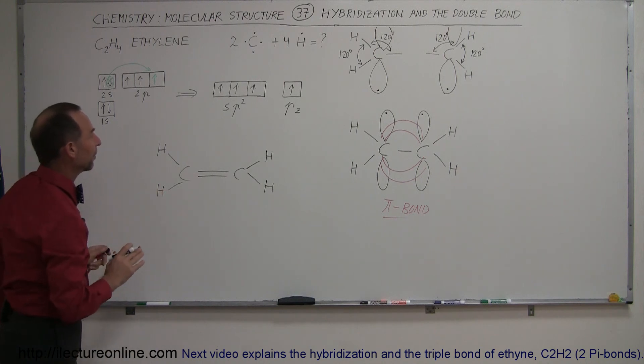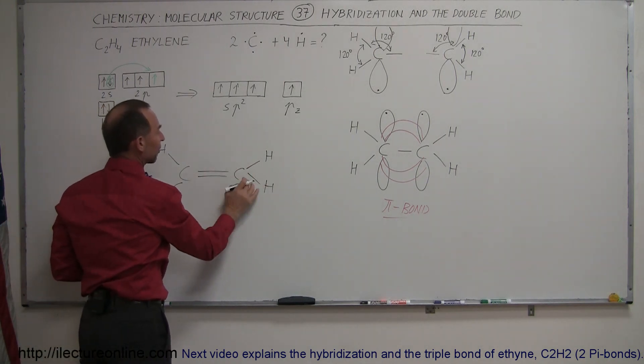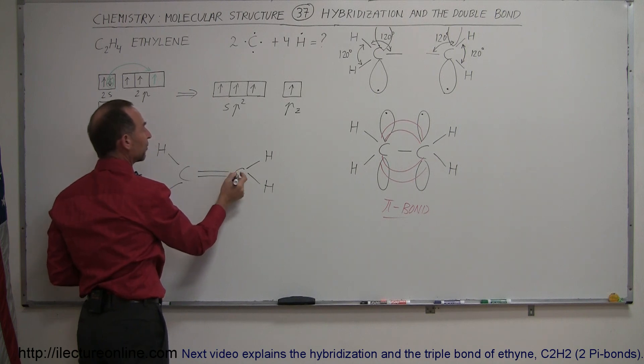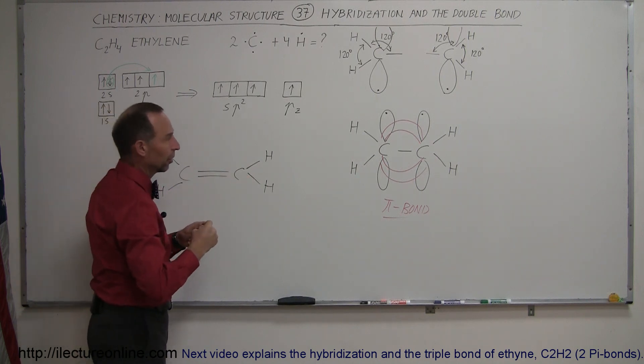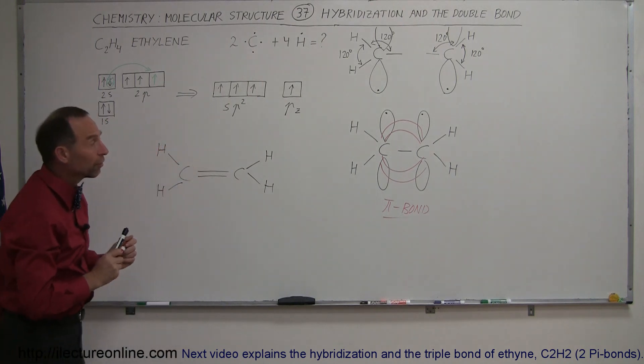But in actuality what happens is that three of these bonds are actually hybridized bonds. And then the fourth bond becomes a pi bond that sticks up and above the actual orientation of the molecule itself.